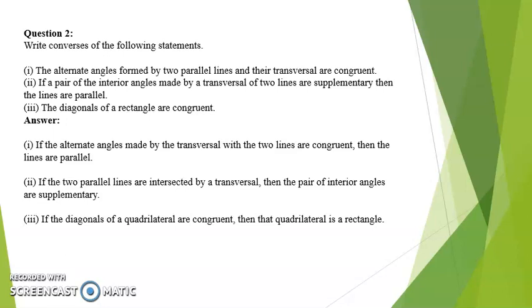Second. If a pair of the interior angles made by a transversal of two lines are supplementary, then the lines are parallel. Answer: If the two parallel lines are intersected by a transversal, then the pair of interior angles are supplementary.